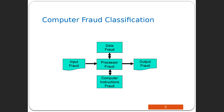Computer fraud can be classified into one of five categories: input fraud, data fraud, processor fraud, computer instructions fraud, and output fraud. This follows the data processing cycle — input, processing, storage, and output — with one extra category: computer instructions fraud. We're going to learn what types of frauds can take place at each stage.